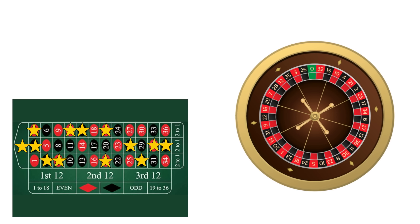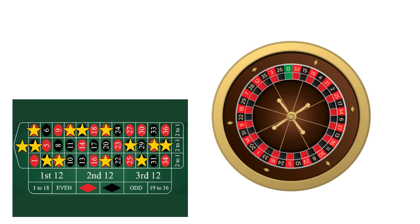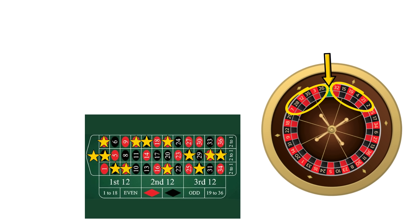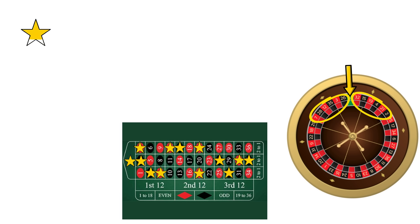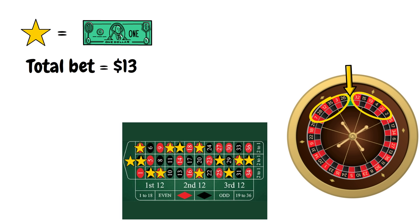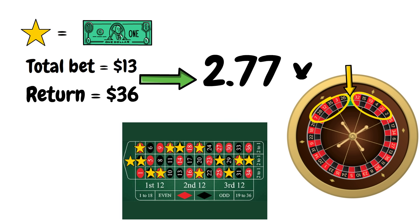A number and its neighbors by 6 means that we are betting on that number and the 6 numbers either side of it on the roulette wheel. So for example, 0, the 6 numbers to its left, and the 6 numbers to its right, giving us a total of 13 numbers covered. Placing $1 each on these 13 numbers would be a total bet of $13. If any of these 13 numbers land, we will be returned $36. $13 bet with a $36 return is a 2.77 return.